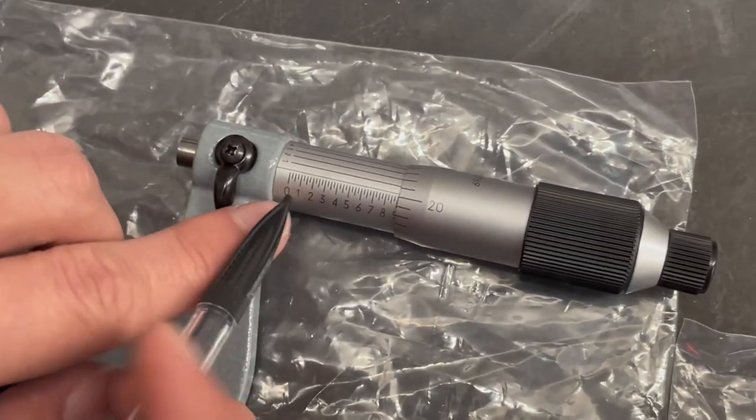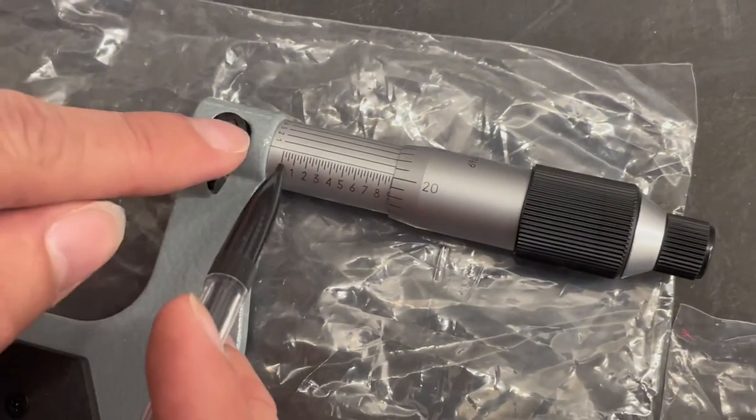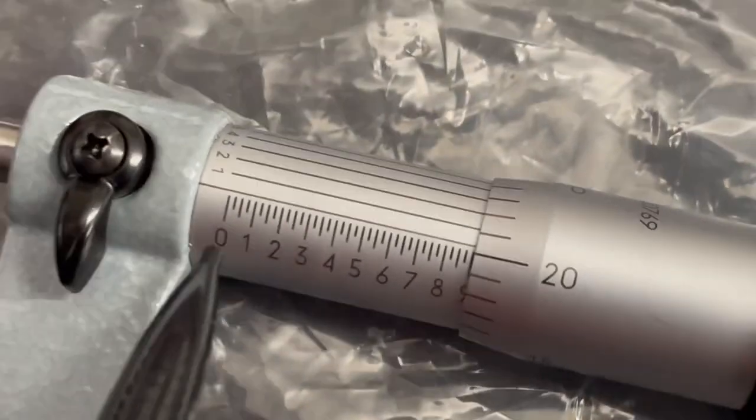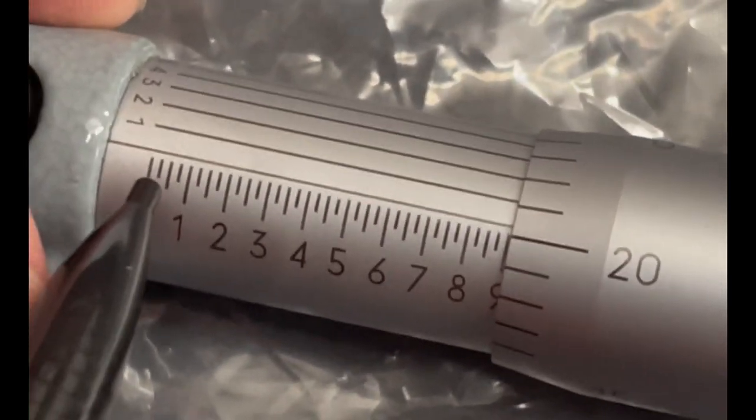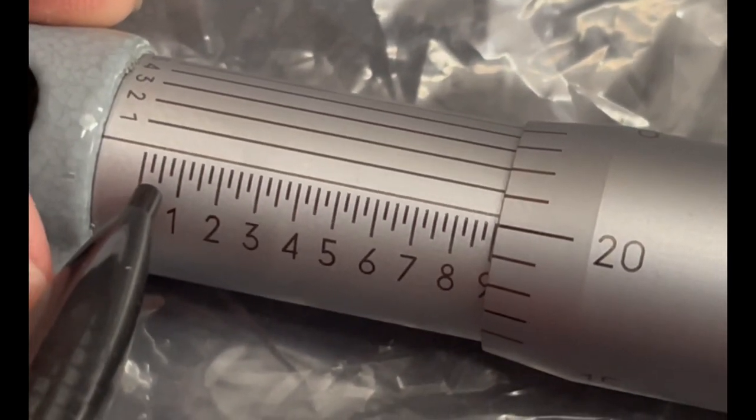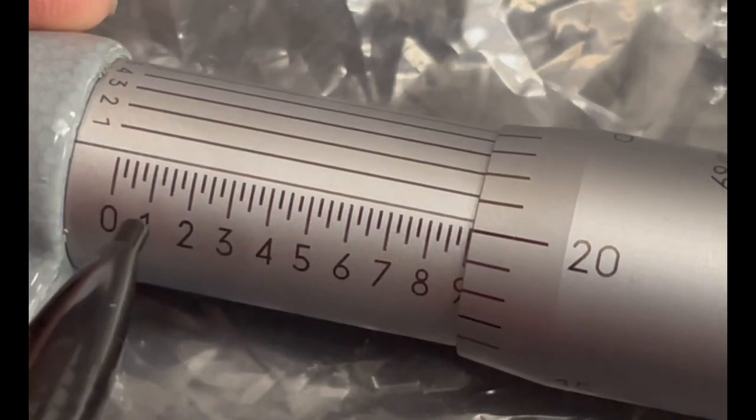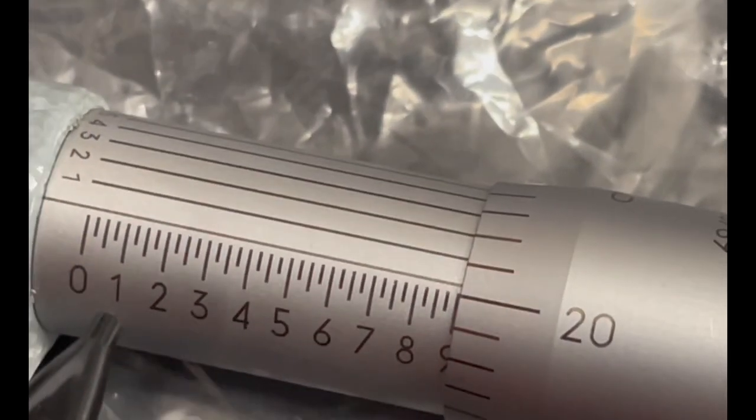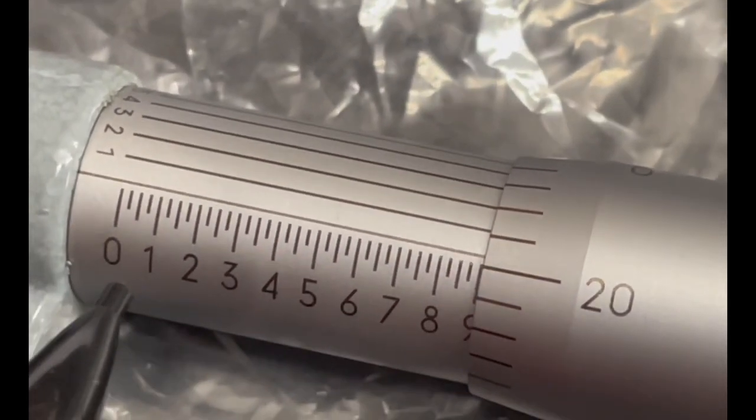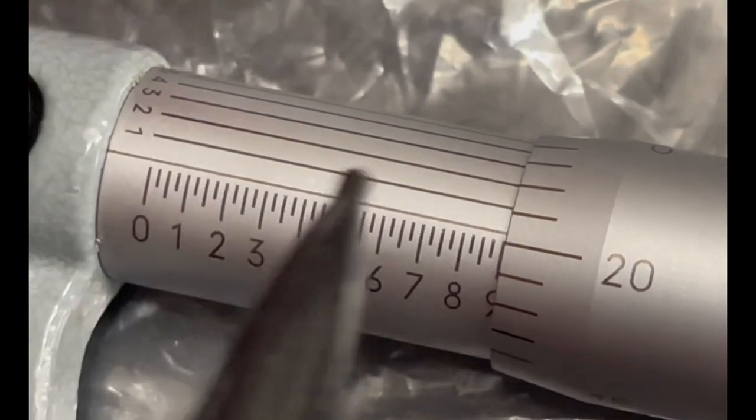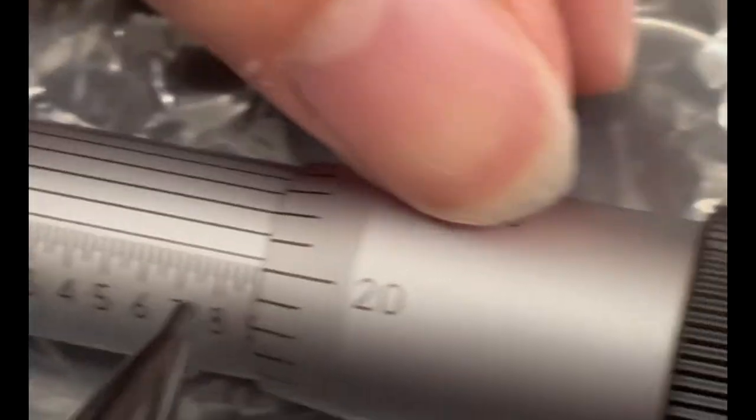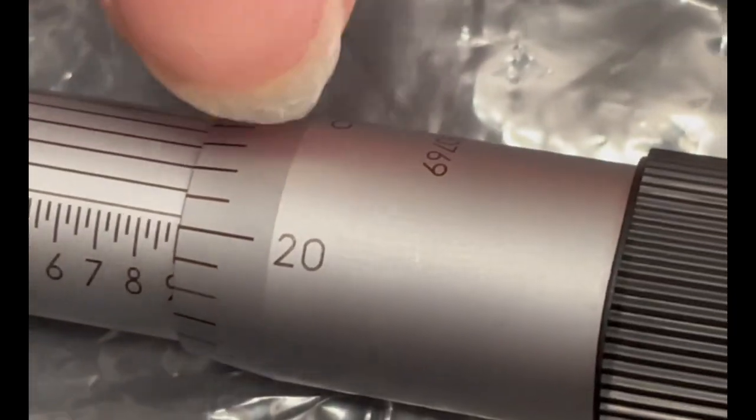On the sleeve we can see number increments. Right here we are zero and it goes to 0.25, 0.50, 0.75, and then 1.0. So this is the tenths and this goes from tenths to thousandths place. Right here on the thimble we have thousandths place increments.